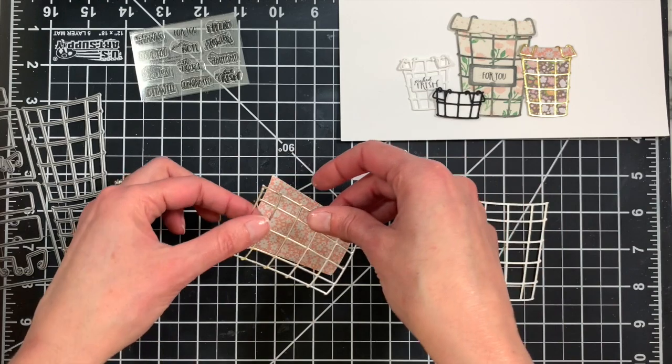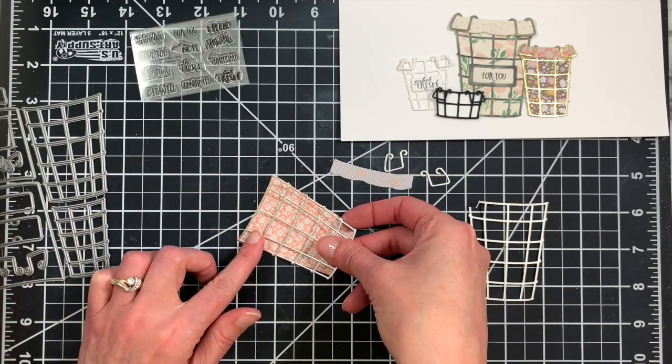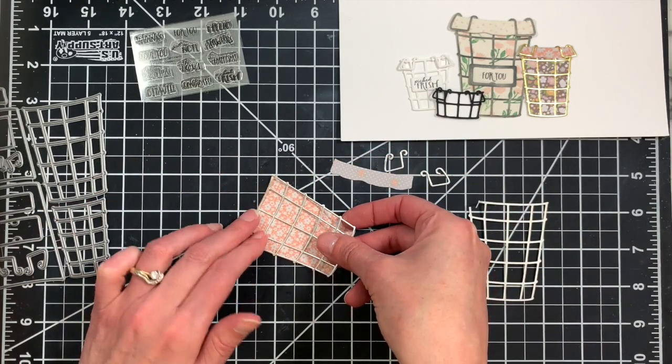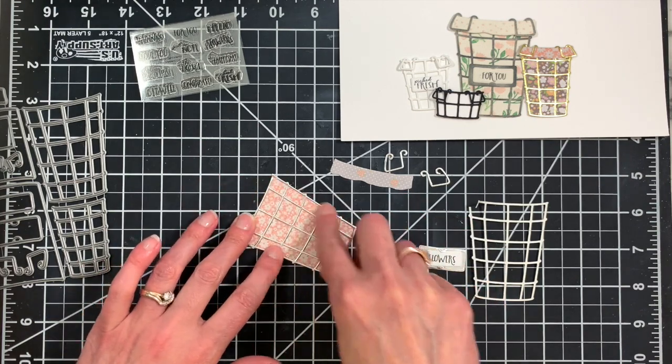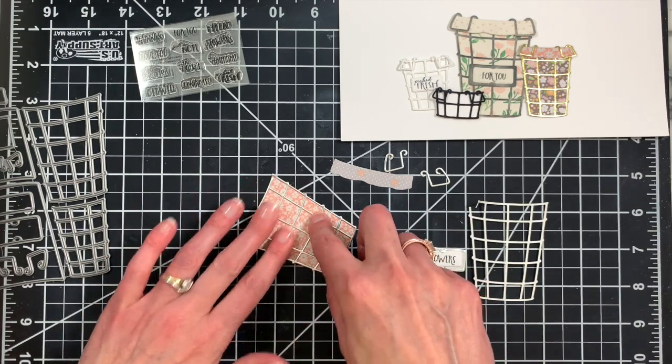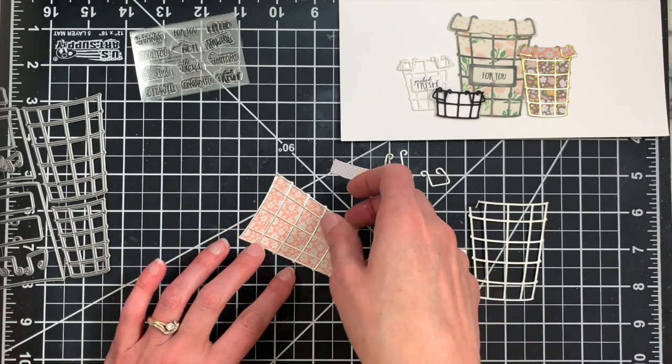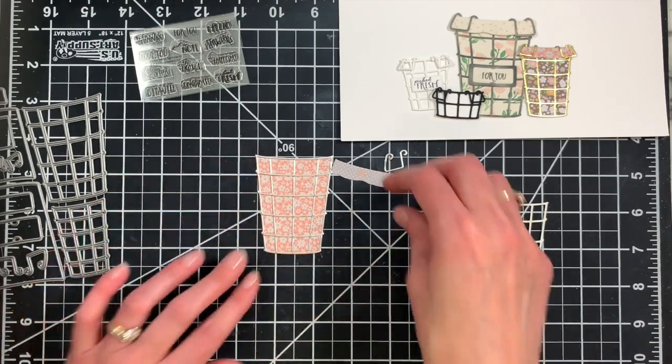I'm just going to go ahead and peel away the liner and then attach that to the liner die cut which I have cut from some pattern paper. You can also cut it from just solid cardstock, or solid cardstock and then add your own stamping to create a pattern on there if you'd like.